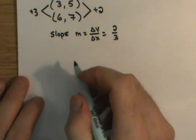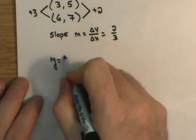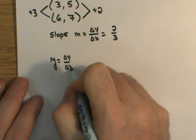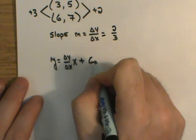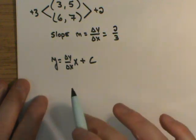Now to write our equation, and I want you to do this every time you do your homework. I want you to write y equals delta y over delta x, x plus c, so that you remember this formula. You need to memorize it, commit it to memory, don't ever forget it.